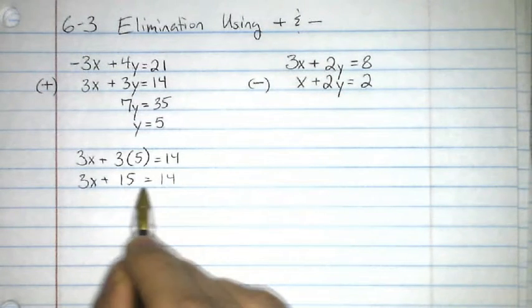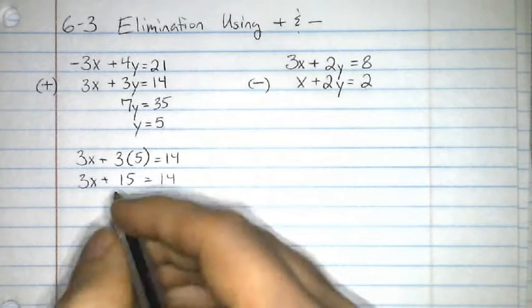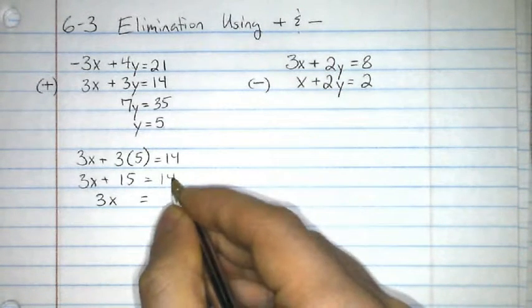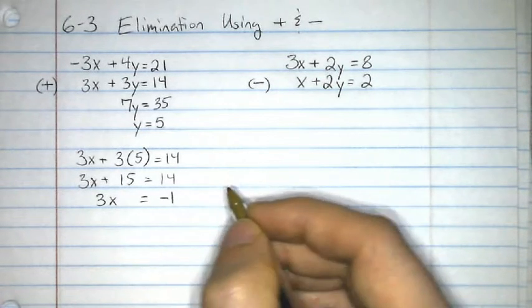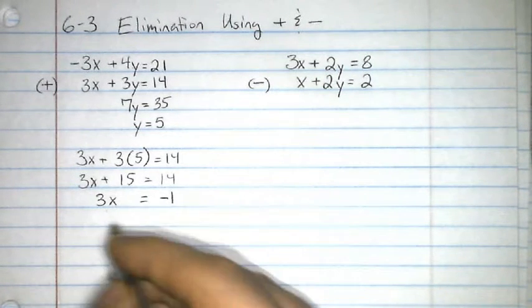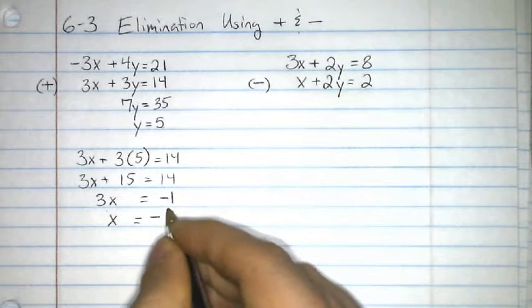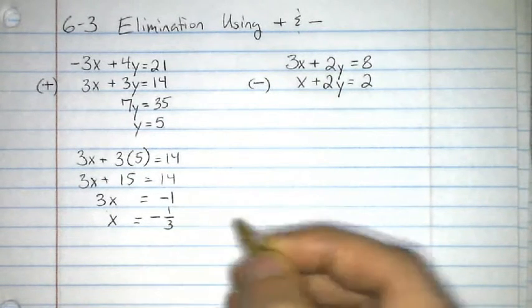Now, I'm going to subtract 15 on both sides. It cancels on the left. On the right, 14 minus 15 is going to be negative 1. And now, I divide both sides by this coefficient. On this side, I have x. On the other side, I have negative 1 divided by 3, negative 1 third.